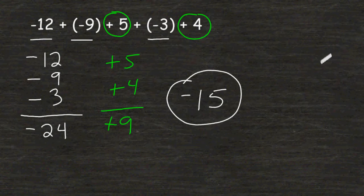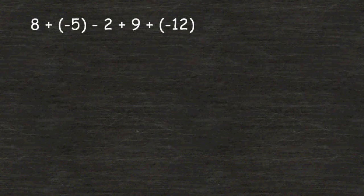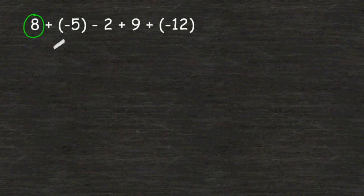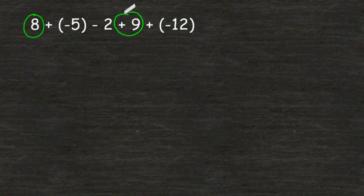Let's try another example. Once again, we are going to group all of the positives together and all the negatives together. We have a positive 8 here and a positive 9 here.